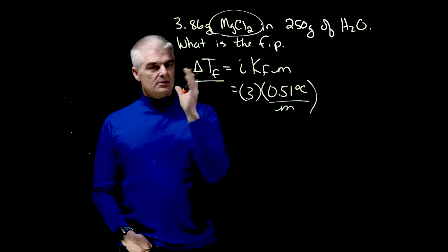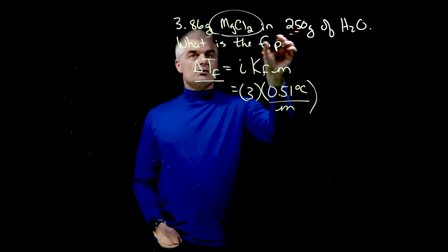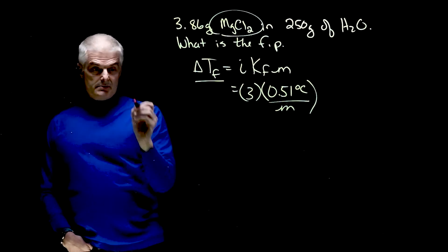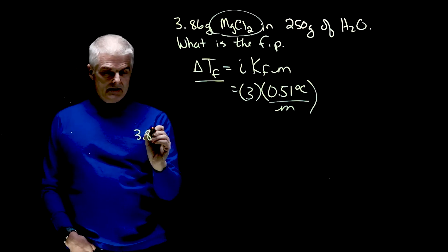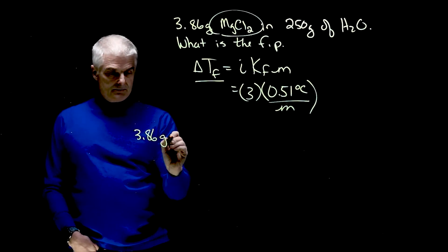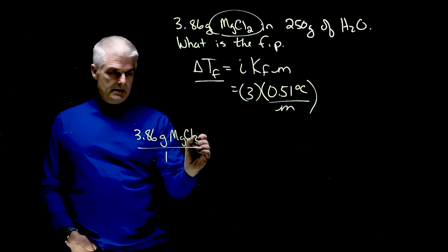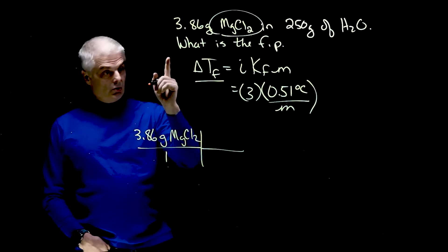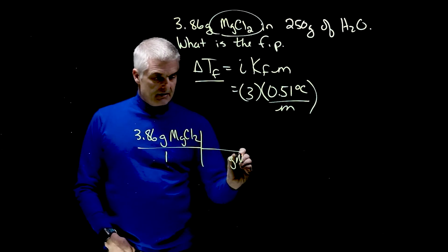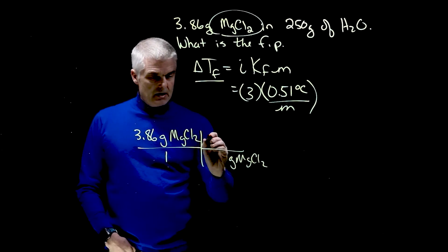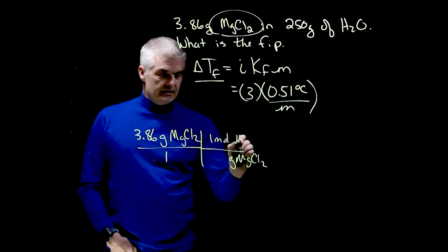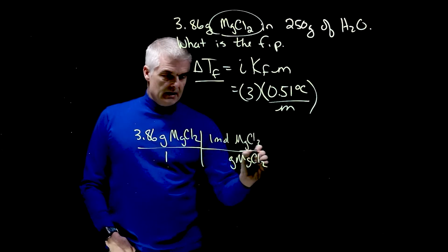And then the molality. We haven't calculated that. So let's figure out the molality. I have, I'm going to do some stoichiometry right here, 3.86 grams of MgCl2 over 1.